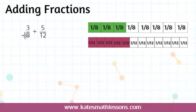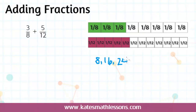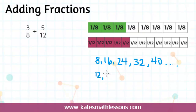A different way to find a common denominator is to list the multiples of each bottom number and see what is the smallest number they have in common. Let's list some multiples of 8: 8, 16, 24, 32, 40. Then multiples of 12: 12, 24 — and we can stop there because 24 is also a multiple of 8. So 24 is a multiple of both 8 and 12, making it the smallest multiple they have in common. This is called the least common multiple, and also the least common denominator.